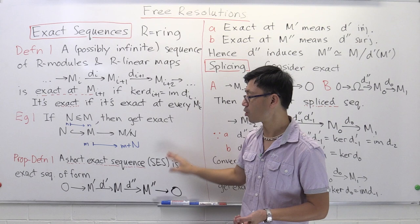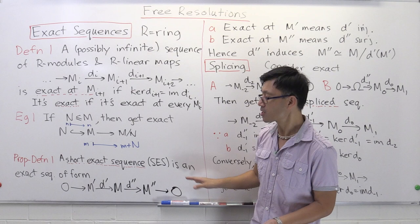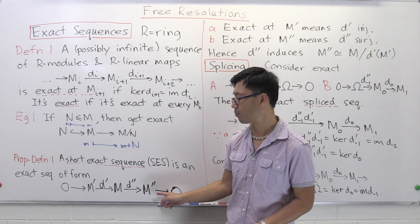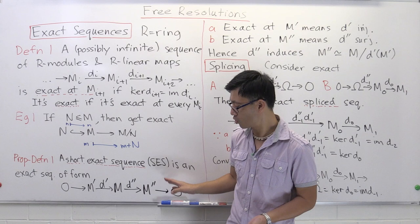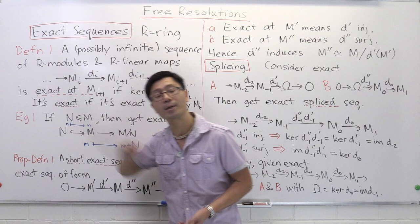The next definition involves a very special and most important case: a short exact sequence, abbreviated SES. That's an exact sequence of the form zero → M' → M → M'' → zero, with five modules where the ones on the ends are both zero and three in the middle with R-linear maps between them. To be exact really means it's exact at M', at M, and at M''.